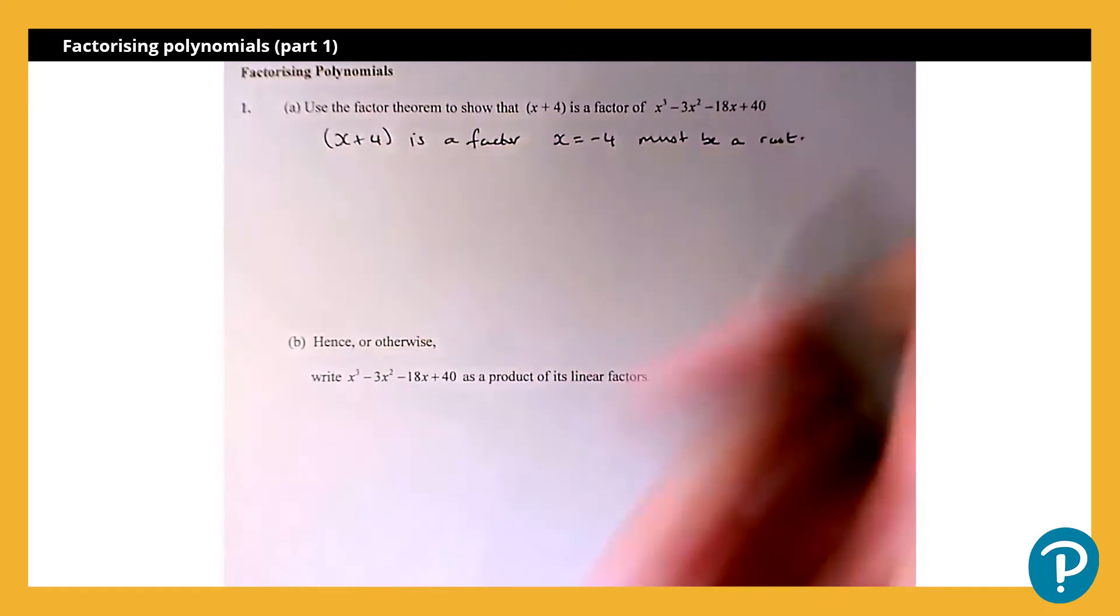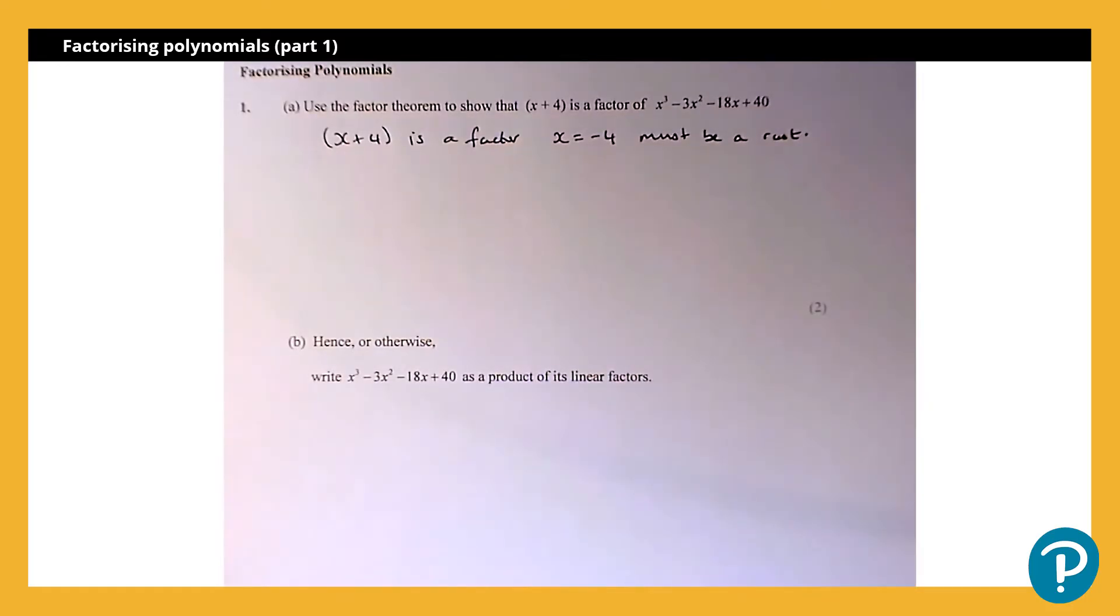Now what does that mean? Well, that means that if I substitute x=-4 into the cubic expression, I would get 0 as an answer. So what we're going to do is evaluate it, and hopefully we'll find that we do get 0 as the answer.